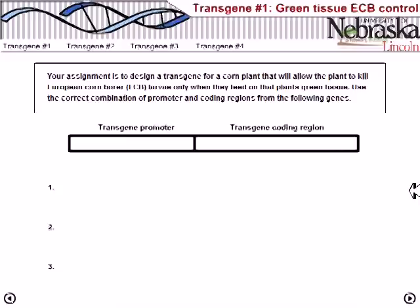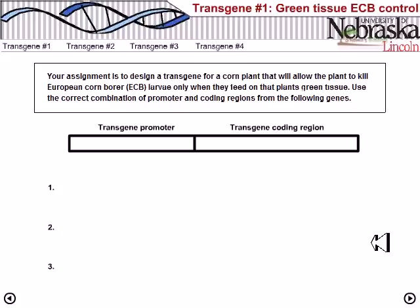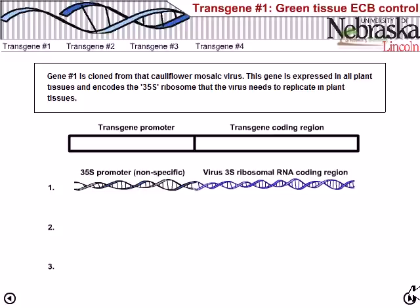The first assignment is to design a transgene for a corn plant that will allow the plant to kill European corn borer larvae only when they feed on the plant's green tissue. We need to use the correct set of genes.